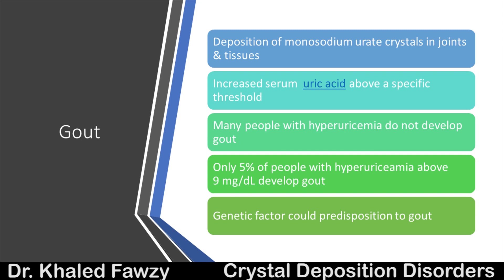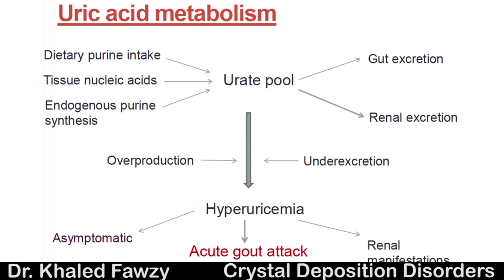Genetic factors and enzymatic deficiencies can play a role. Uric acid comes from the breakdown of purines, which are found in nuclei of cells containing DNA and RNA. When cells are broken down, purines are metabolized into uric acid or urates. Any food that is plant-based does not produce purines and does not produce uric acid.